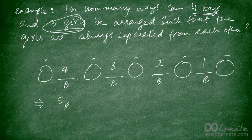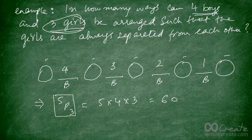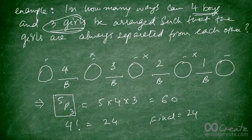We have only three girls to place in five positions. The number of arrangements is written as 5P3, which equals 5 × 4 × 3 = 60. Step one gave us 4! = 24, and step two gives 5P3 = 60. The final answer is 24 × 60 = 1,440.